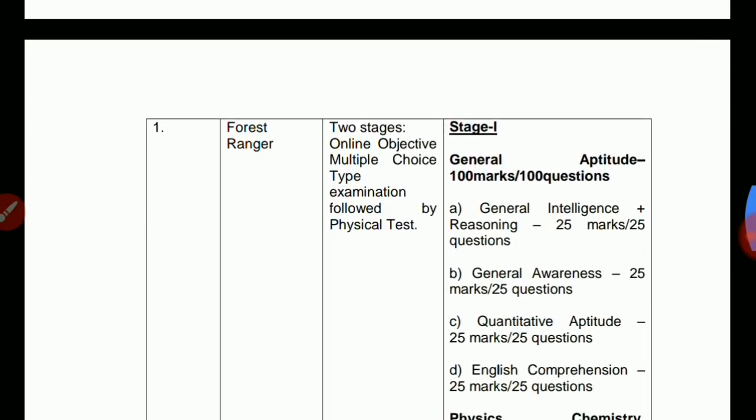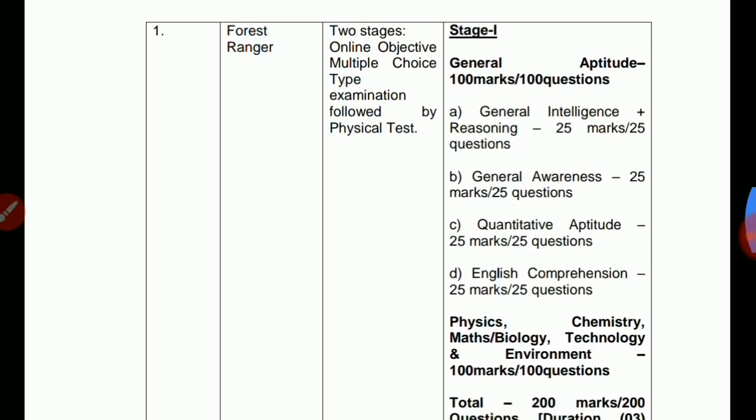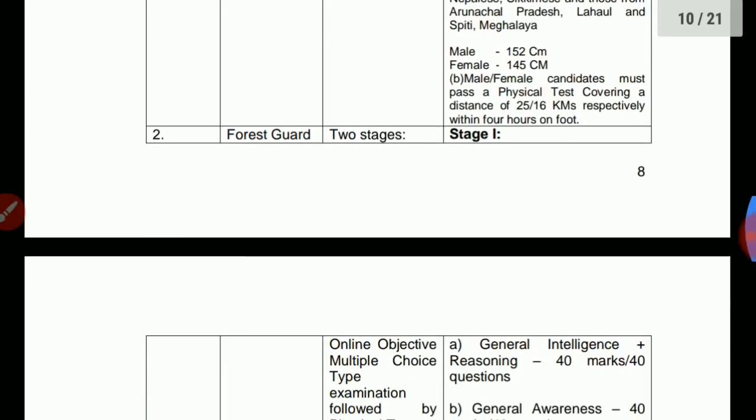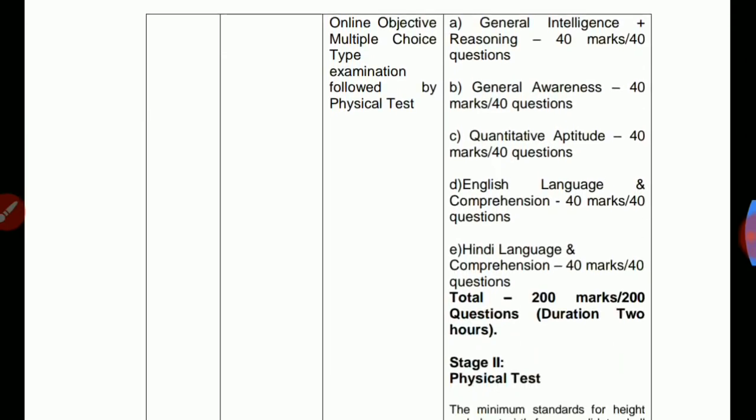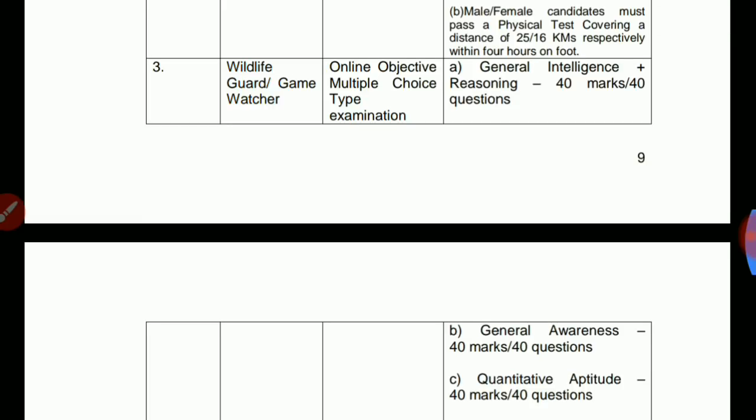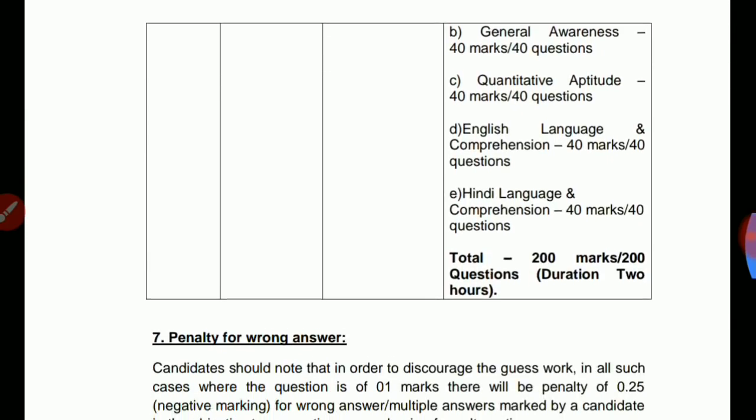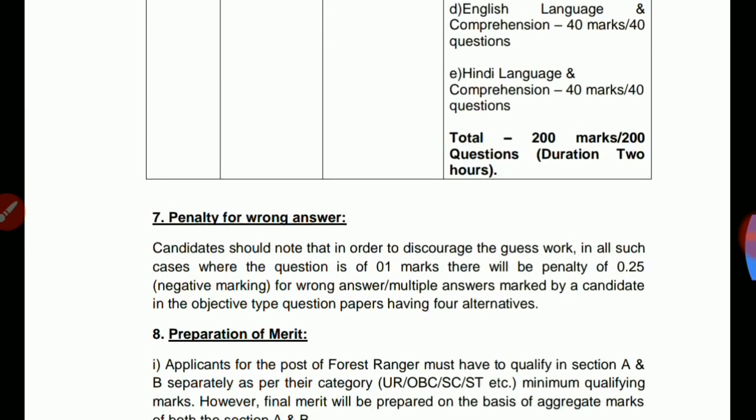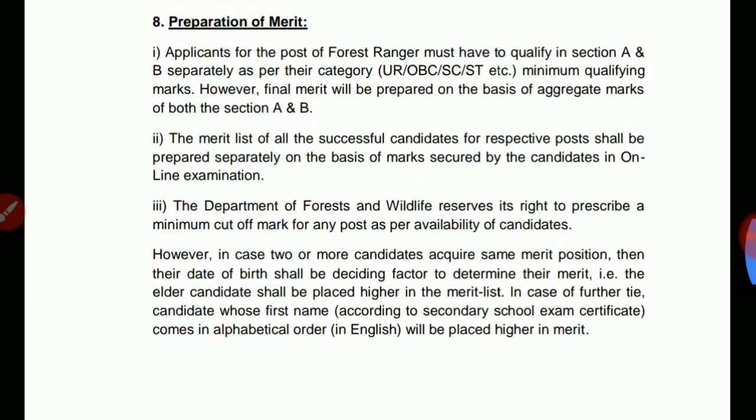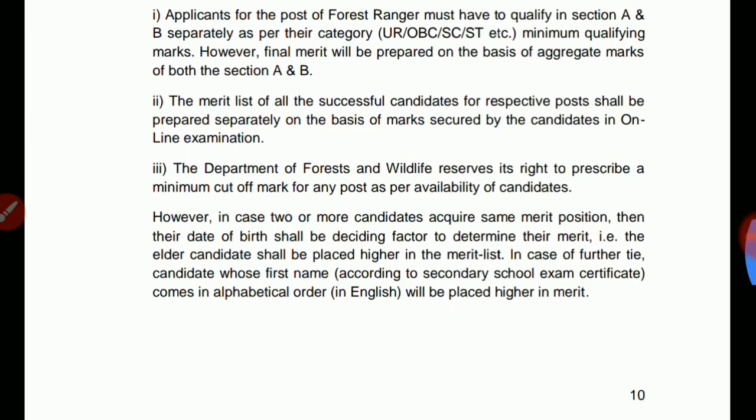The competitive exam has Stage 1 which is a written exam, and Stage 2 which is a physical test. There is negative marking of 0.25 marks for wrong answers.